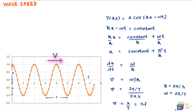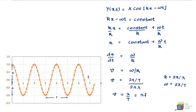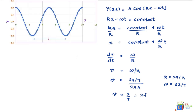Therefore, velocity v = λ/T, which can also be written as v = λf, where f is the frequency, since 1/T = f. This expression shows that the wave velocity is one wavelength per time period — the wave moves a distance of one wavelength λ in one period of oscillation.